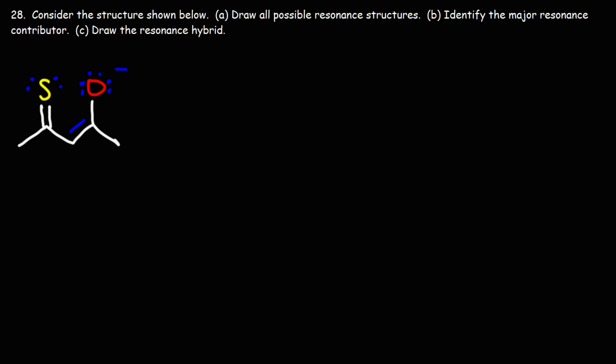So the first resonance structure that we can draw: we can take a lone pair from the negatively charged oxygen atom. It's nucleophilic. We could use that lone pair to form a pi bond and then push the two pi electrons on this carbon.